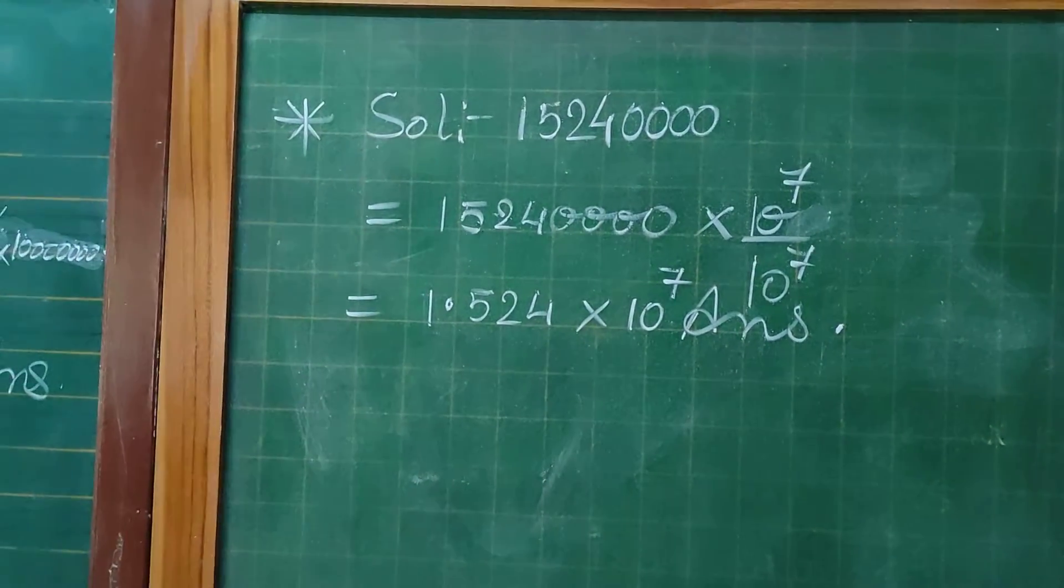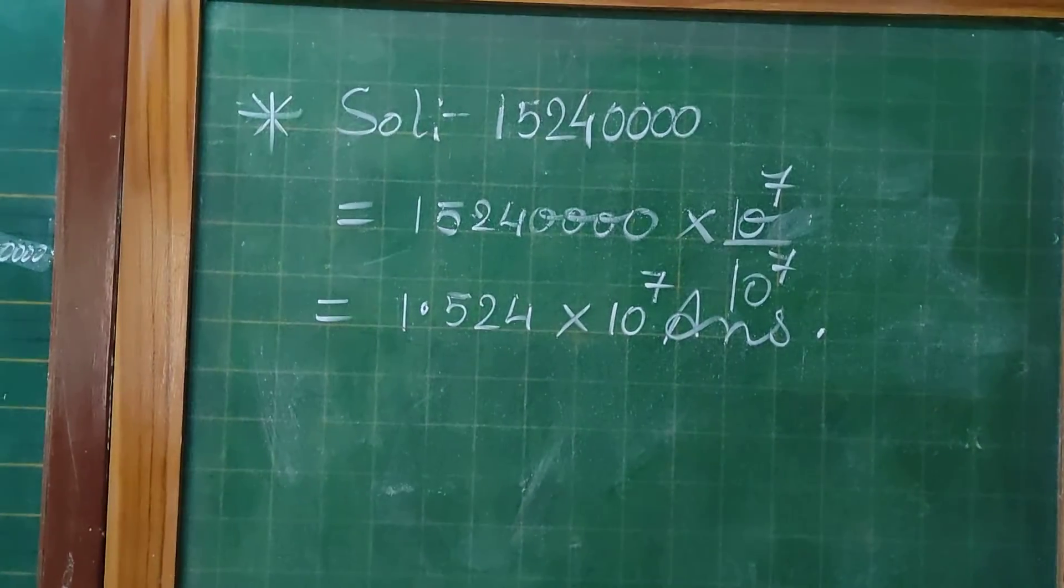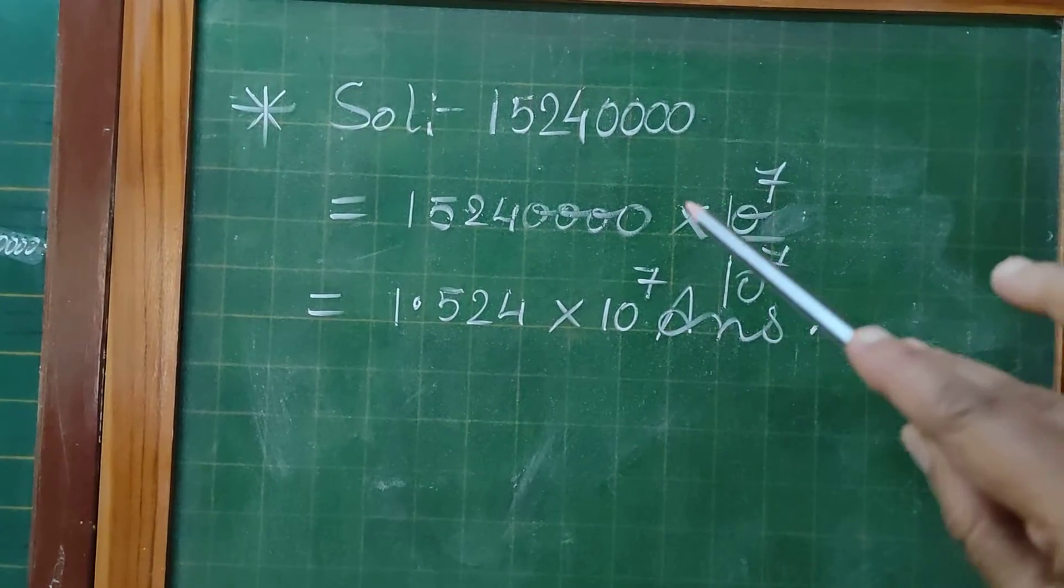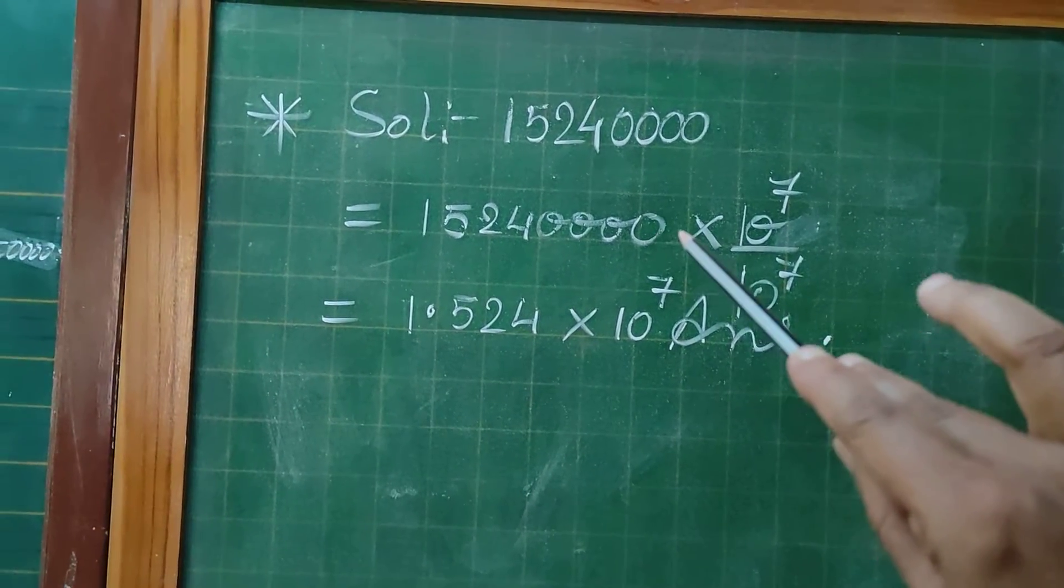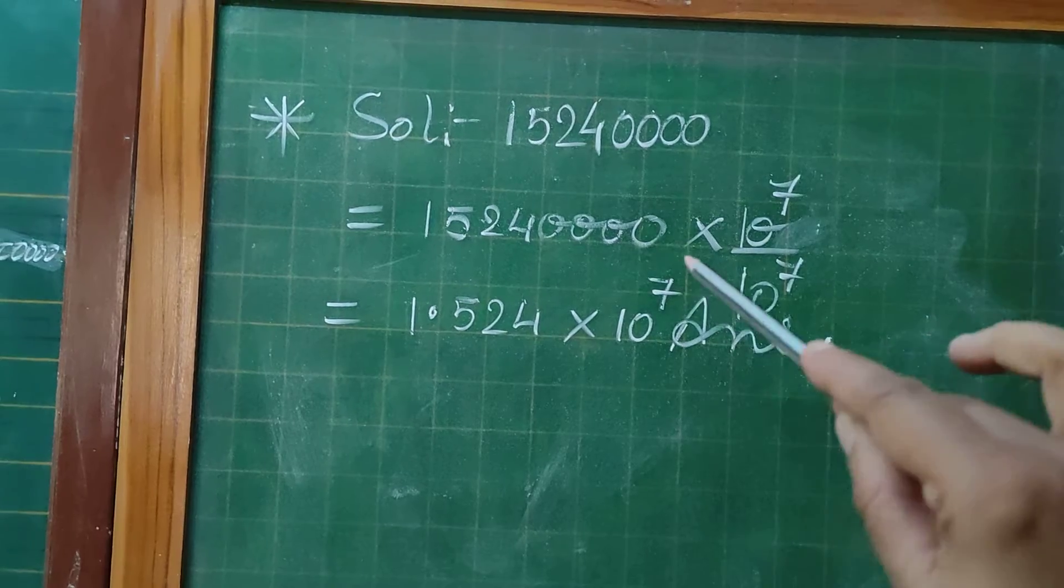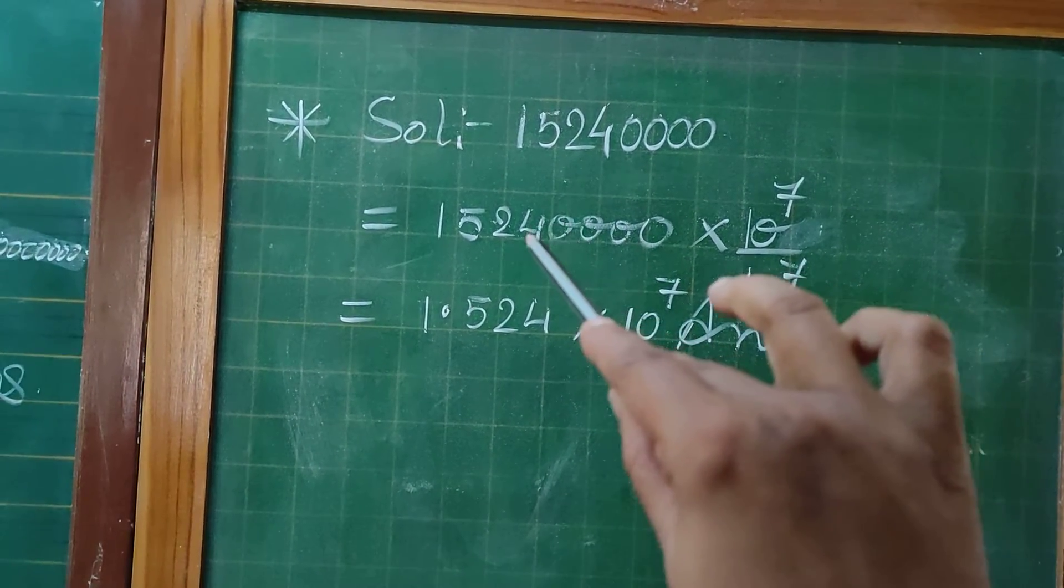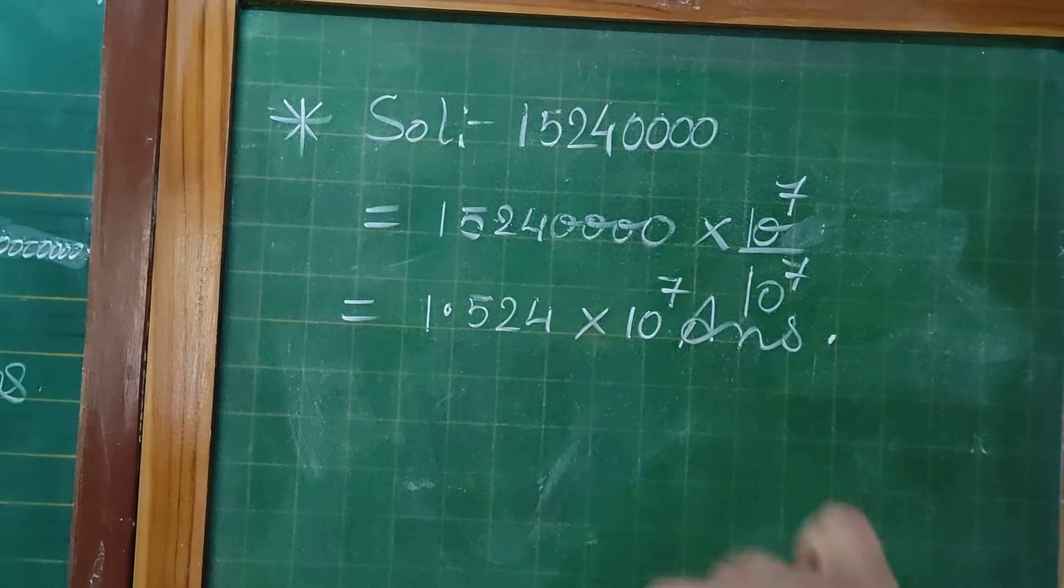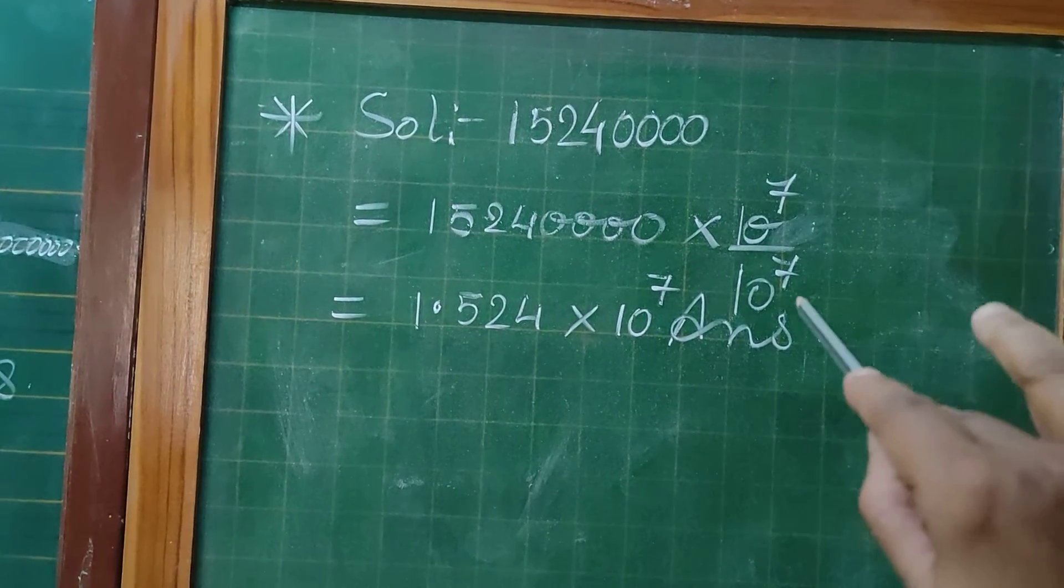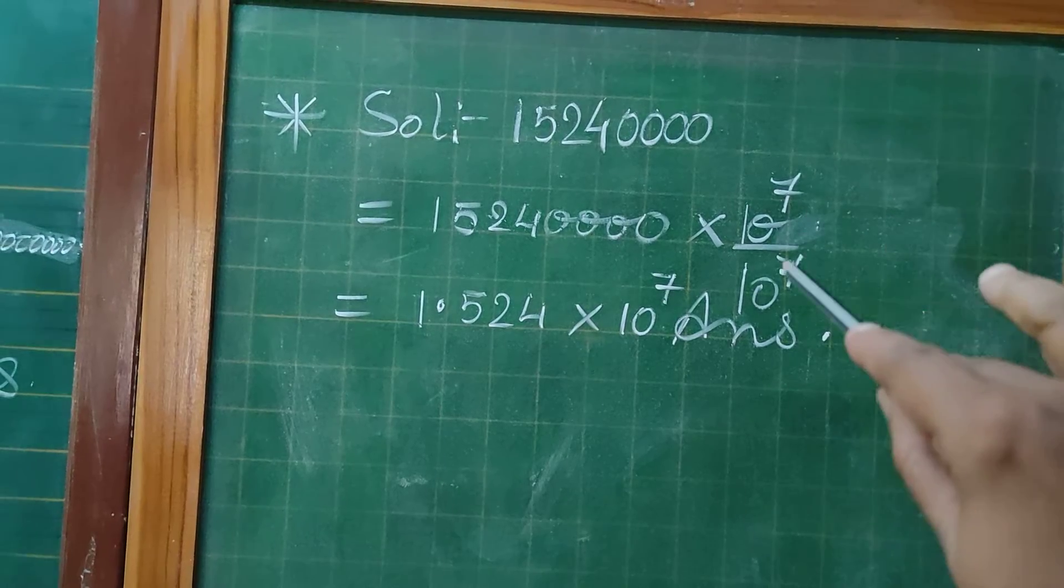Now you can see here 15240000. We want, suppose that decimal is here, so we will assume that decimal is here. So left hand side we have to move, so 1, 2, 3, 4, 5, 6, 7.